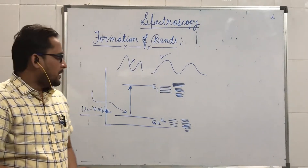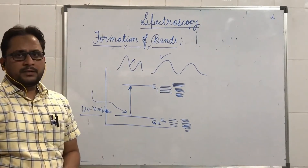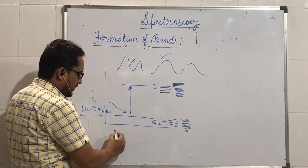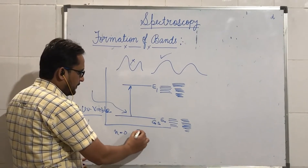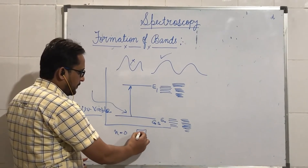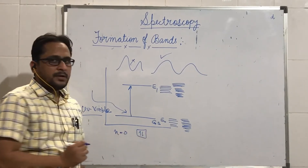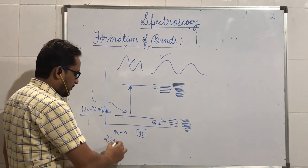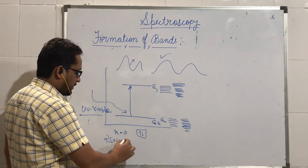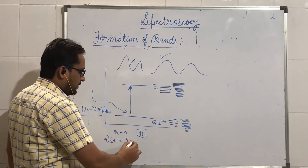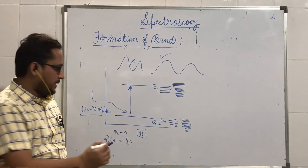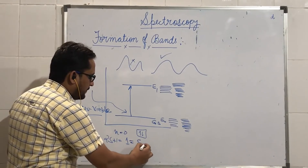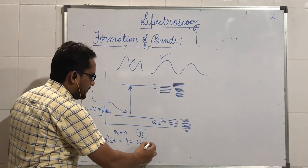In the ground state, the electrons are paired — meaning the number of unpaired electrons is zero and they have paired spin. Therefore, if you calculate 2s plus 1, it is equal to 1. So we can say that in the ground state, the electrons are in the singlet state.